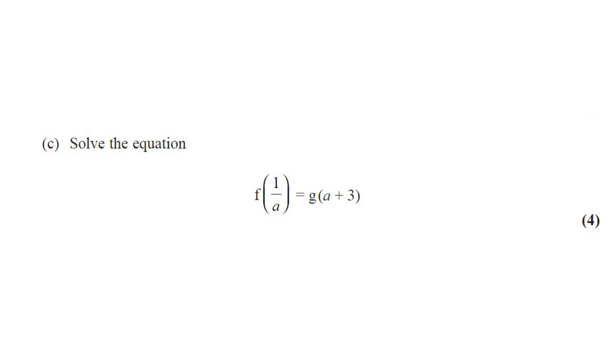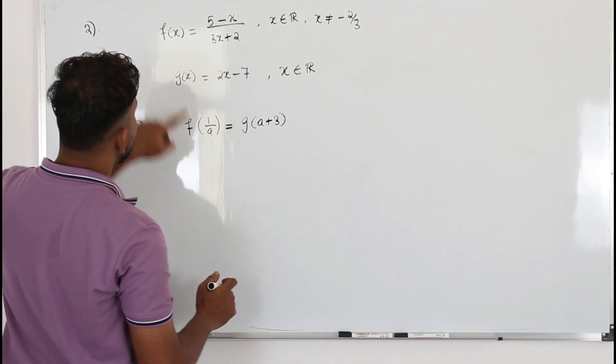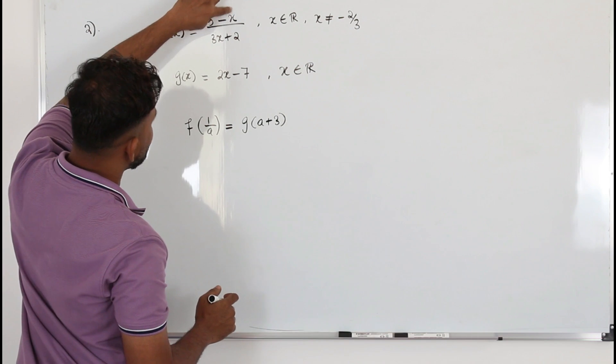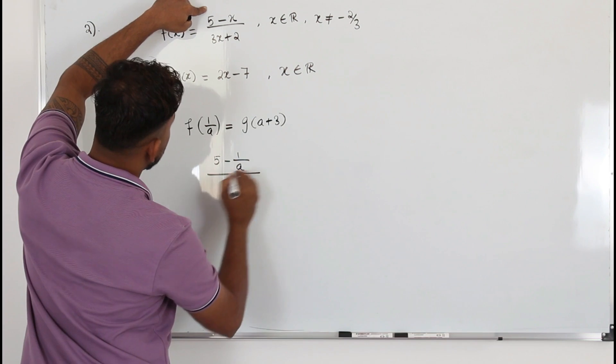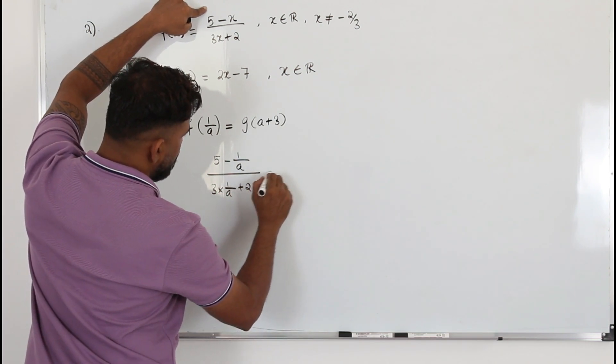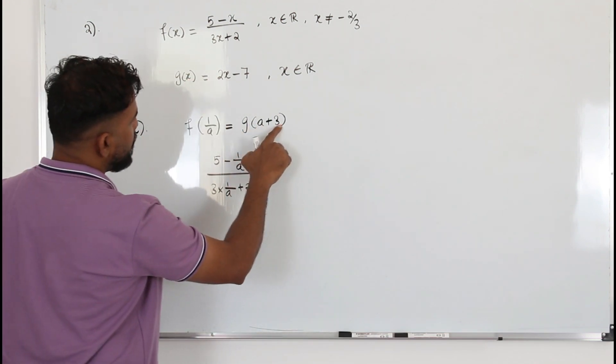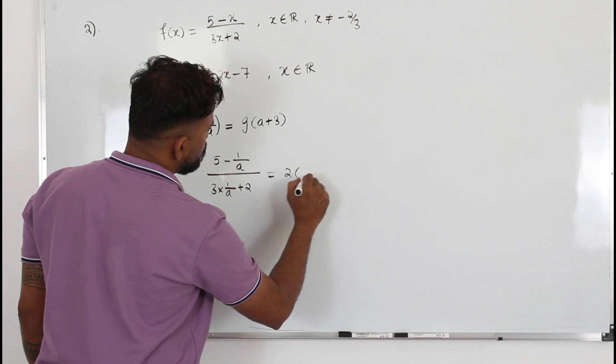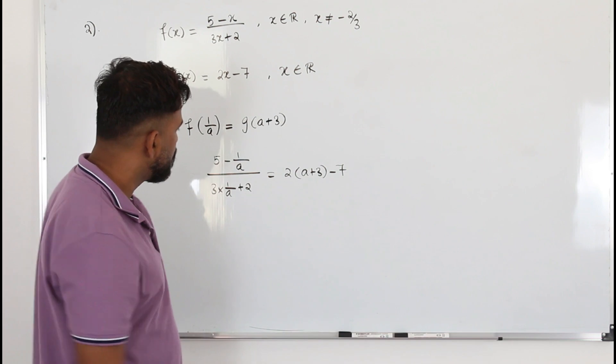Part C, solve the equation f(1/a) equals g(a + 3). This question got 4 marks. We need to solve this equation. Take the function f(x), replace x by 1/a here. So (5 - 1/a) / (3 times 1/a + 2) equals, take the function g(x) and replace x by a + 3 here, 2 times (a + 3) - 7. We need to solve this equation now.